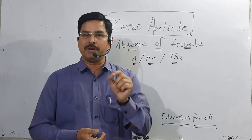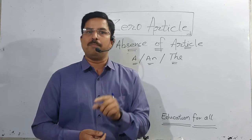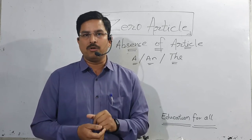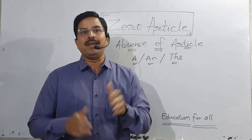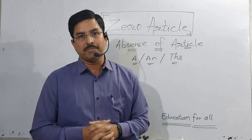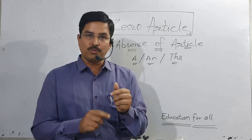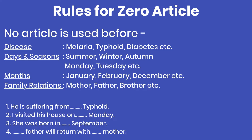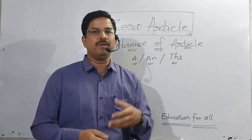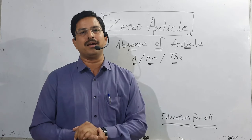For days and seasons: if you refer to a particular season or month, 'the' is used. For example, 'The August of 1947 was a red-letter day' — a very important month, so I am referring to that particular month; it becomes definite, so 'the' is used. As examples in the slide: 'He is suffering from typhoid.' 'I visited his house on Monday.' 'She was born in September.' 'Father will return with mother.' — in all four, no article before disease, day, month, or relation.